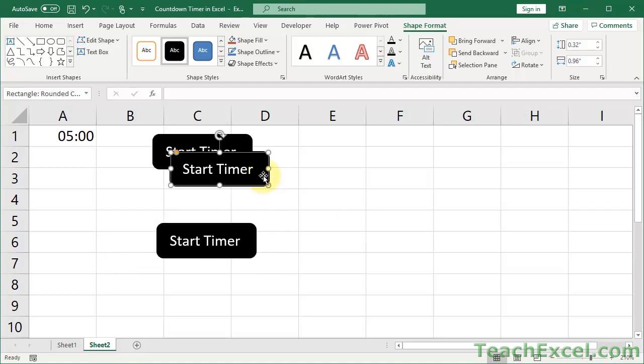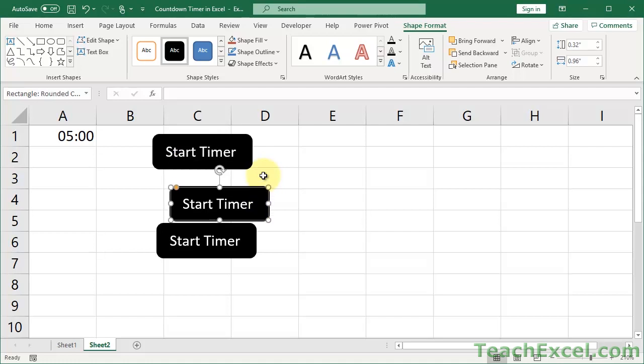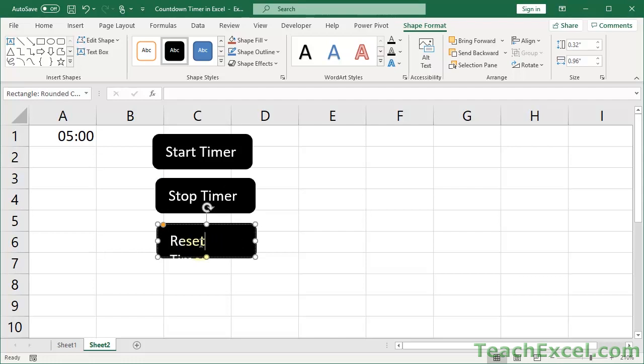And all we have to do right now is to change the text on them and then assign it a macro. So Start Timer. Stop Timer. Reset Timer. OK. We need to make this dude a little bigger. So play with the formatting as much as you would like.